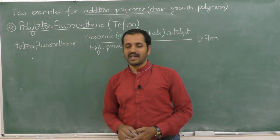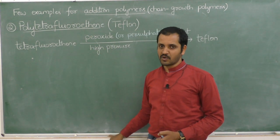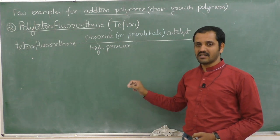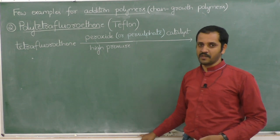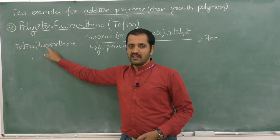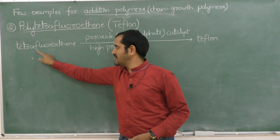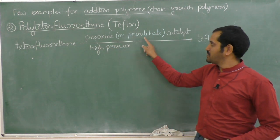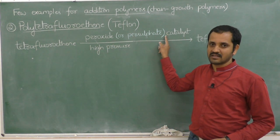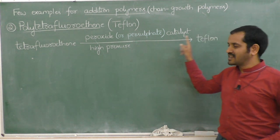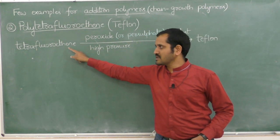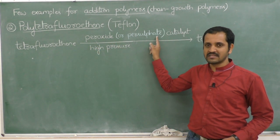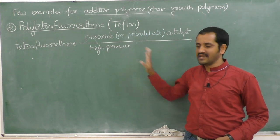The second example for addition polymers is polytetrafluoroethylene, commonly called Teflon. It is obtained by the polymerization of tetrafluoroethylene in the presence of peroxide or persulfate as a catalyst at higher pressure.